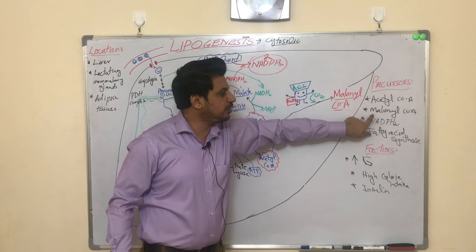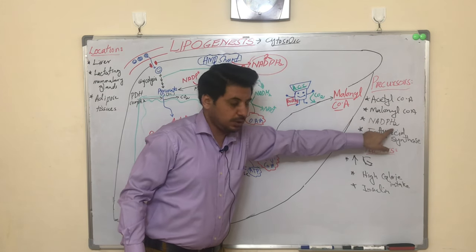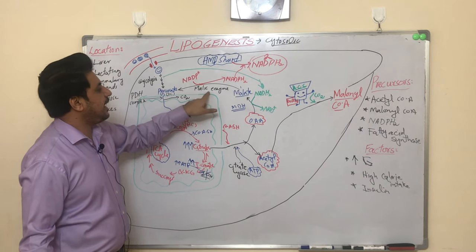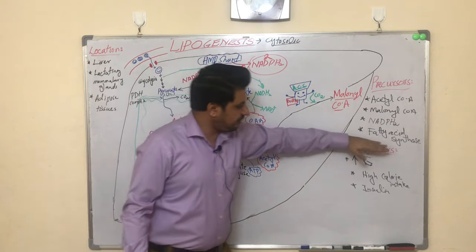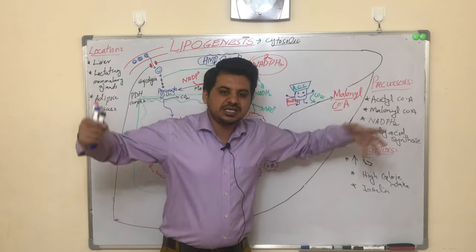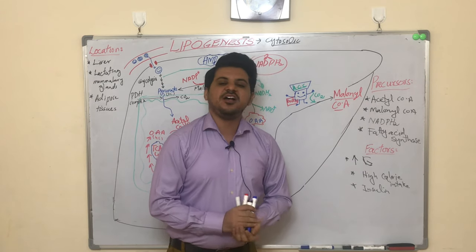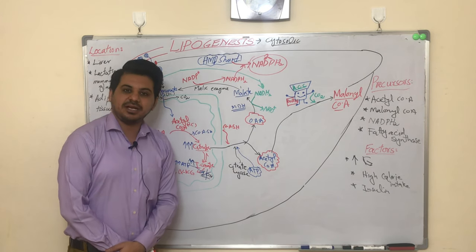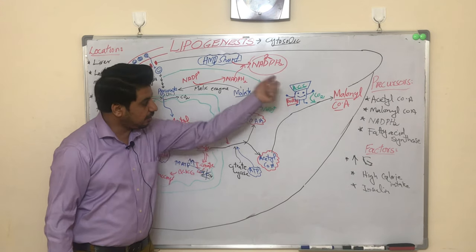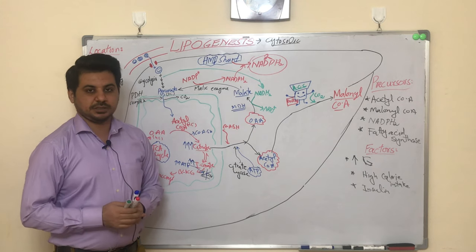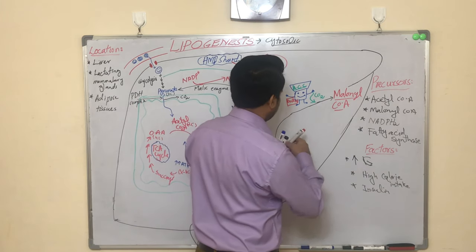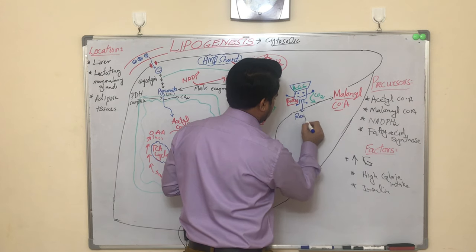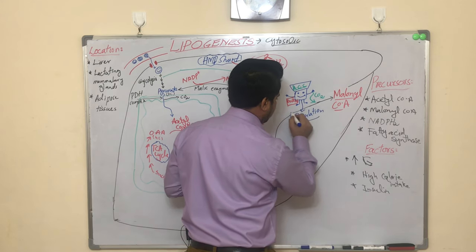So as a result of this whole pathway, we have obtained our malonyl-CoA (from acetyl-CoA), NADPH2 (from the oxaloacetate-to-pyruvate conversion via malic enzyme and from the HMP shunt). Now the fatty acid synthase enzyme will start incorporating these carbons together to synthesize fatty acids.